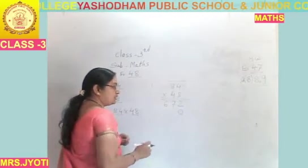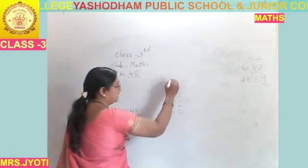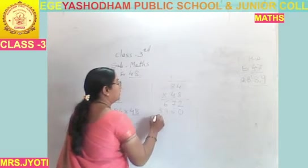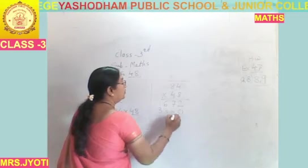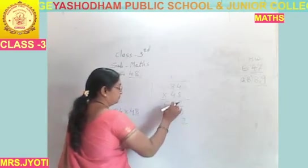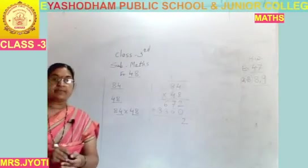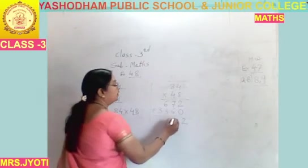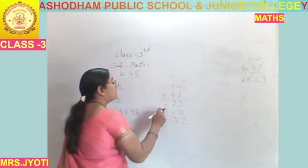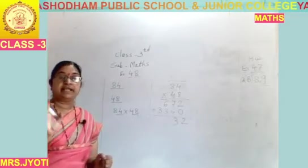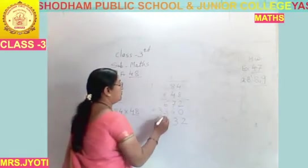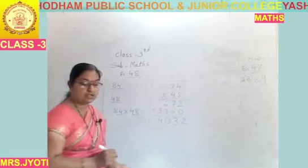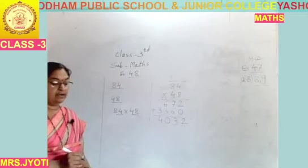Next: 4 fours are 16, carry 1. 4 eights are 32 and 1 is 33. 2, 0. 7 plus 6 is 7. 6 plus 6 is 12 and 1 is 13, carry 1. 6 plus 3 is 9, and 9 plus 1 is 10, carry 1. 3 plus 1 is 4. So the answer is 4032.